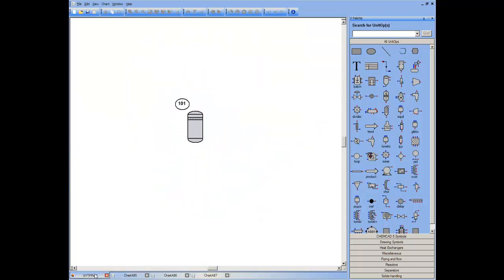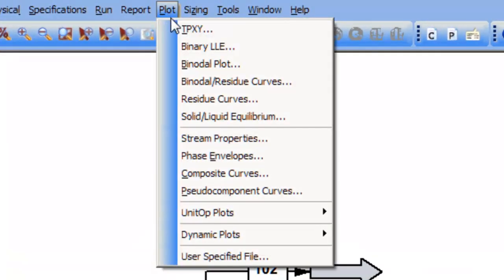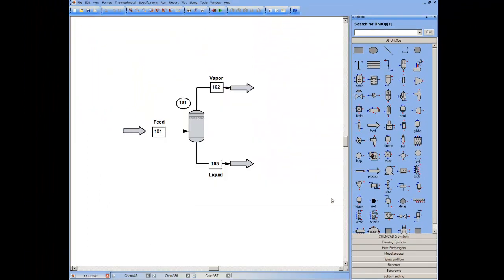For this case, in order to do a ternary plot, plot TPXY, choose the primary components, choose the trace component, select its composition in the liquid phase, decide whether you're going to plot the actual composition or plot on a third component free basis, in this case water free basis, choose your output, and plot.